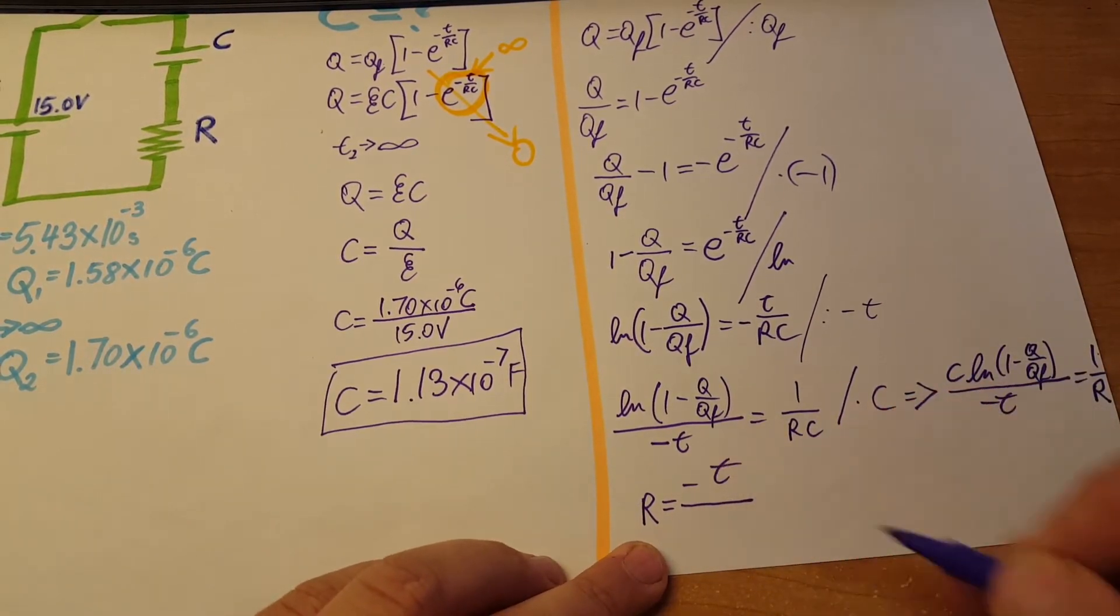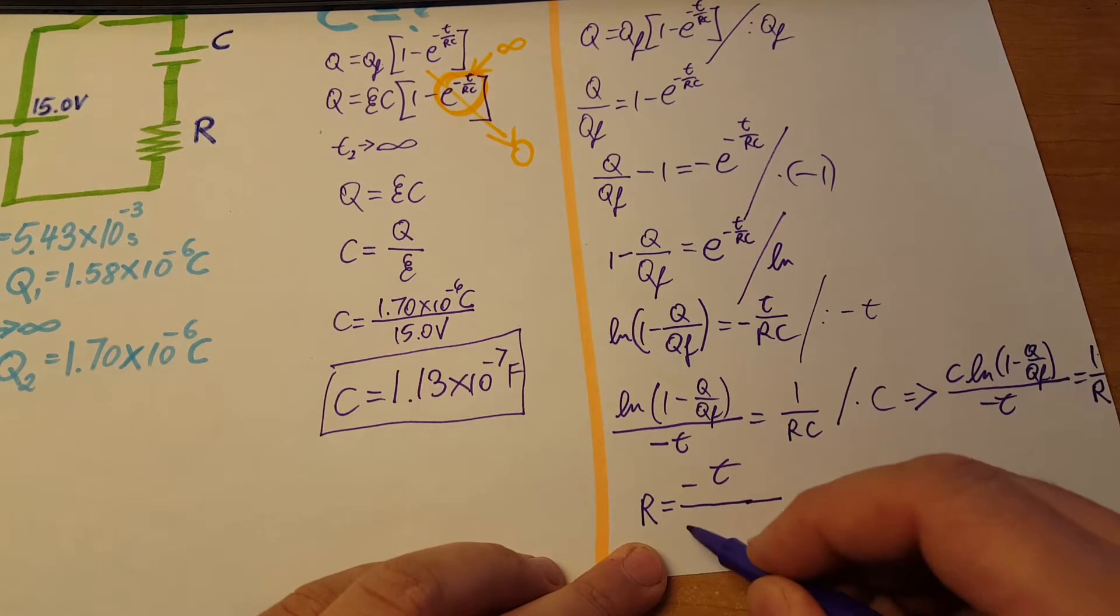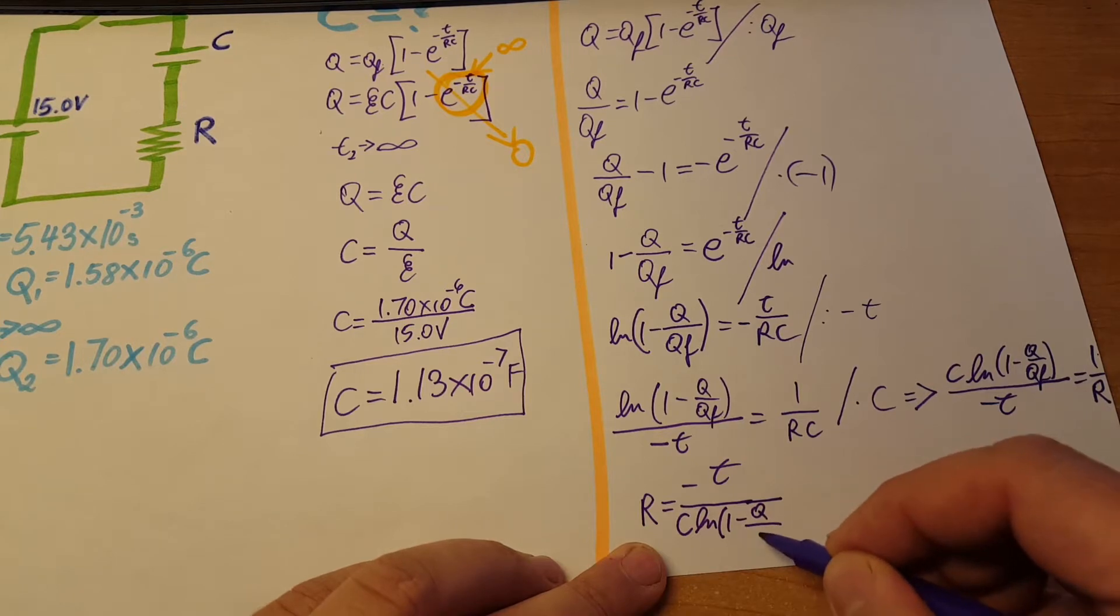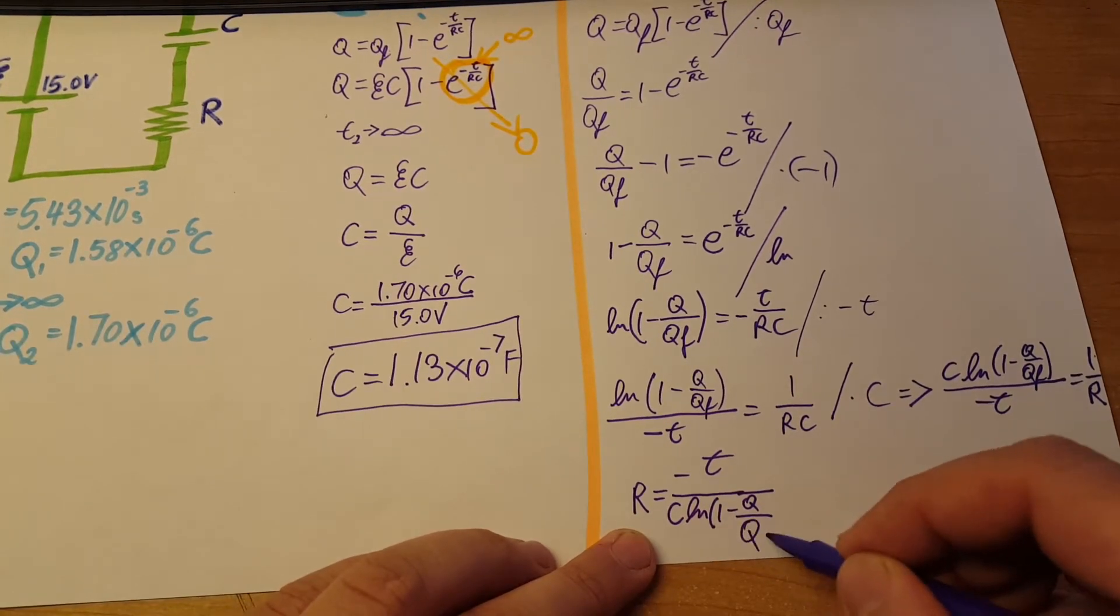And now simply you can solve for R. R equals negative t over C times LN of one minus Q over Q final.